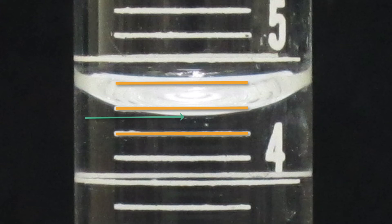There's the marking. I've put that mustard-colored line for the marks on the graduated cylinder, and the green arrow is pointing to the bottom of the meniscus.